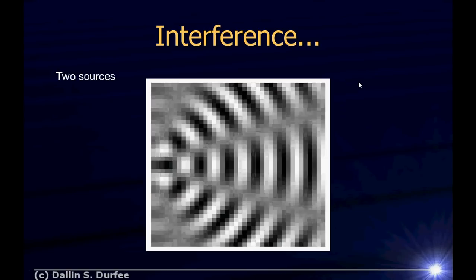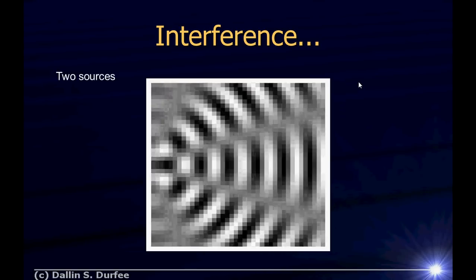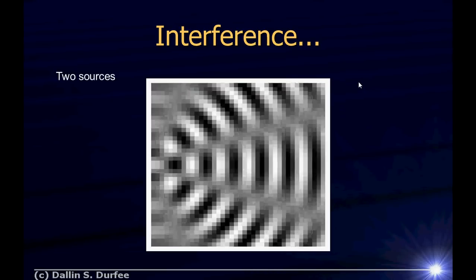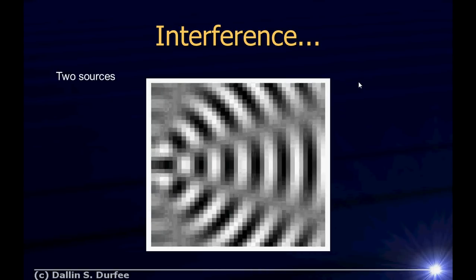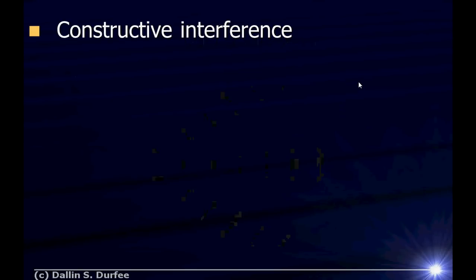You get interference patterns with water waves, but you can also make interference patterns with light. In fact, this is how we know that light is a wave. The first experiment that really proved light is a wave was done by making an interference pattern like this. Of course, later on quantum mechanics came along and said light's not really a wave, but that's another story for another day. So for now, light is a wave, and what do waves do? They interfere.